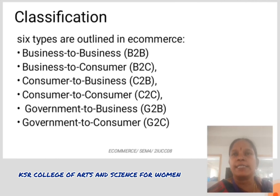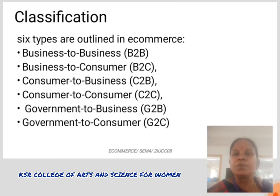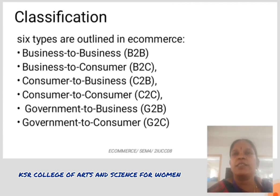4. Customer to Business: A customer to business model is a type of commerce where the consumer or end user provides a product or service to an organization. 5. Business to Government: Businesses and government agencies use central websites to exchange information and do business with each other more efficiently than they usually can off the web.